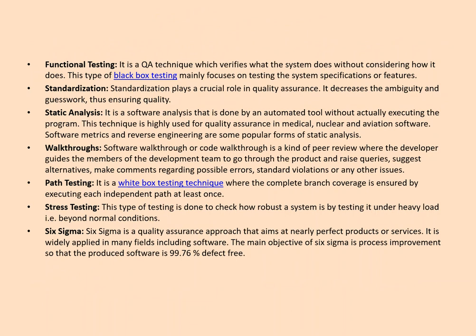Functional testing is a technique which makes sure what a system does without considering how it does it — essentially a type of black-box testing. Standardization plays a crucial role in quality assurance as it decreases ambiguity and guesswork, thus ensuring quality. Static analysis is done by an automatic tool without actually executing the program and is mostly used in medical, nuclear, and aviation software. Software walkthrough or code walkthrough is a kind of peer review where the developer guides team members through the product to raise queries, suggest alternatives, and make comments related to errors or standard violations.